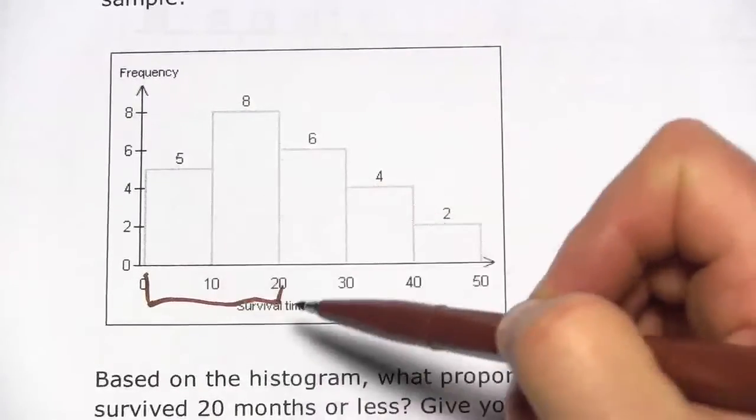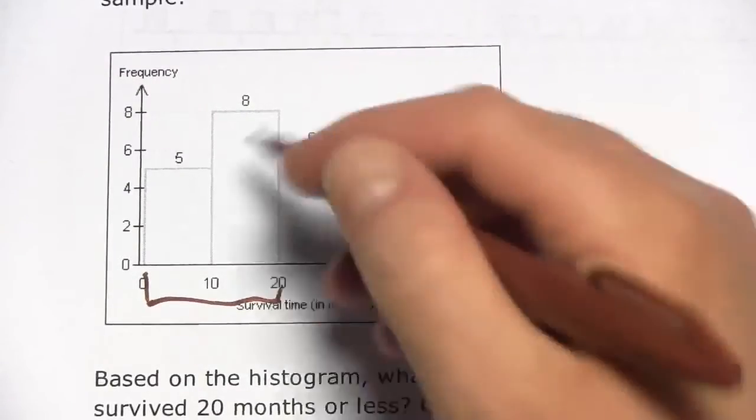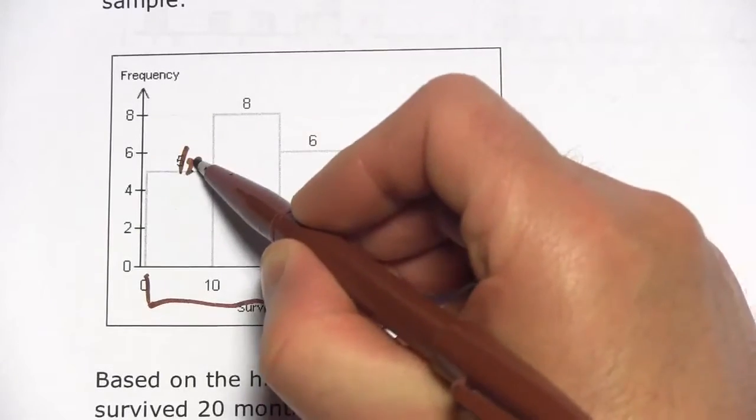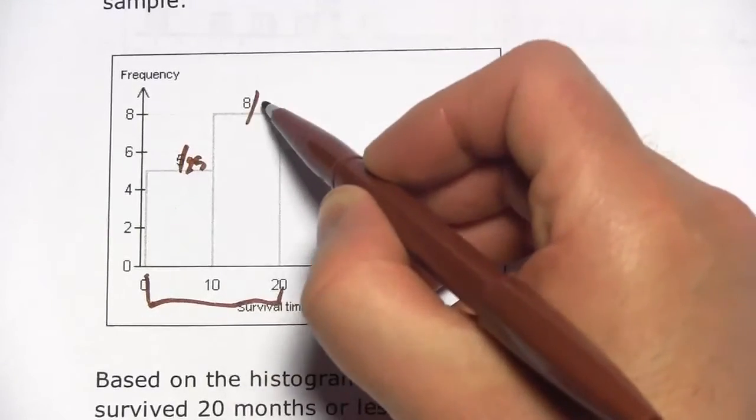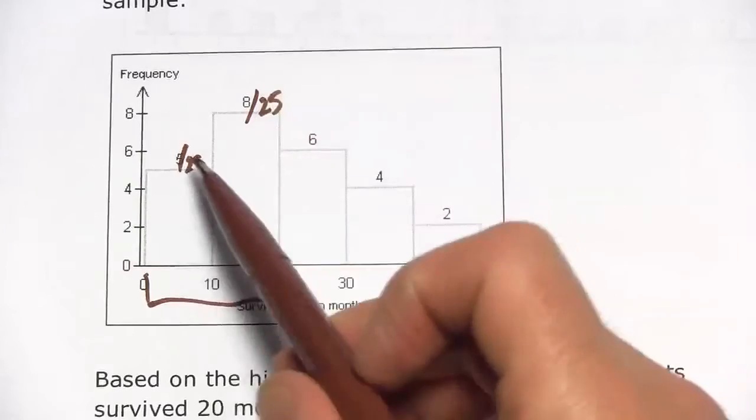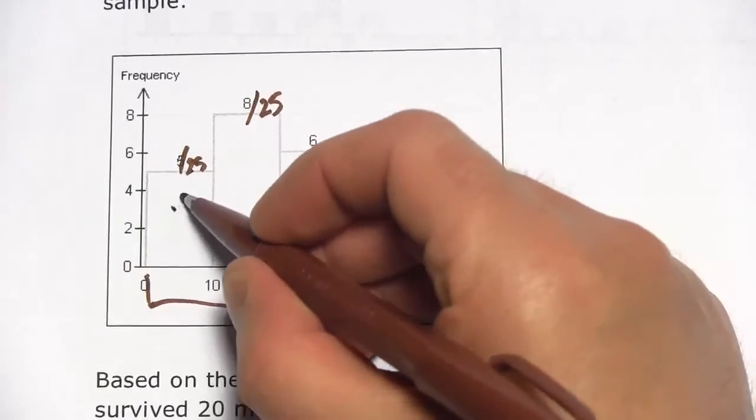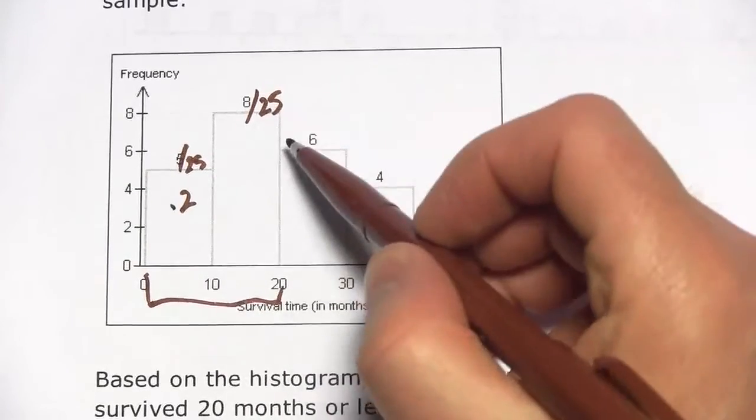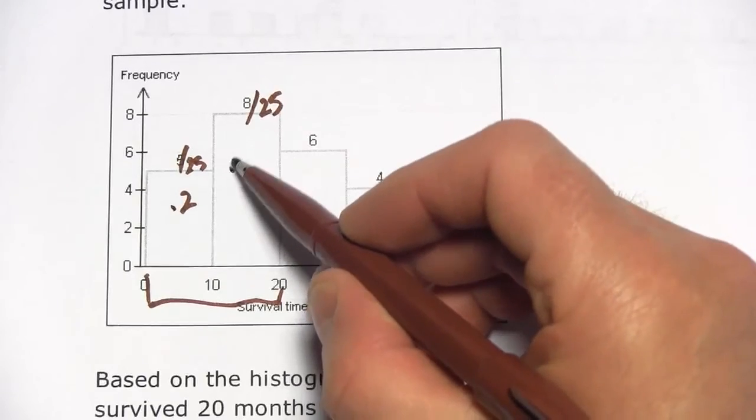Or we could also take the relative frequency. If you want to compute the relative frequency, you just divide by the sample size for each of these, so that would be 5 divided by 25, 8 divided by 25. 5 divided by 25 is 0.2, 8 divided by 25 is 0.32.